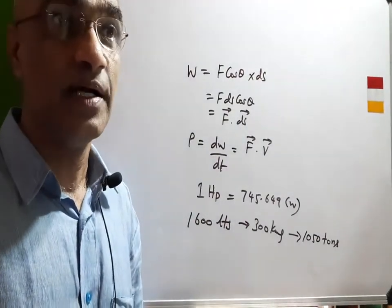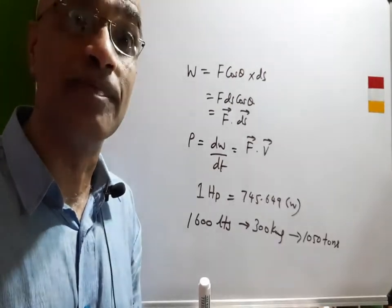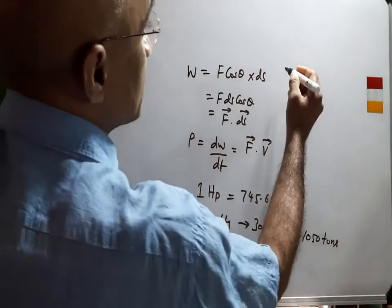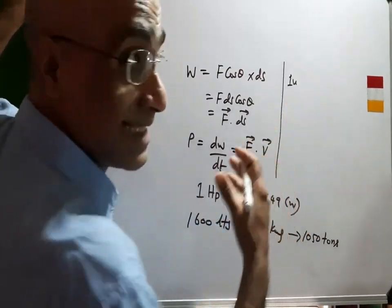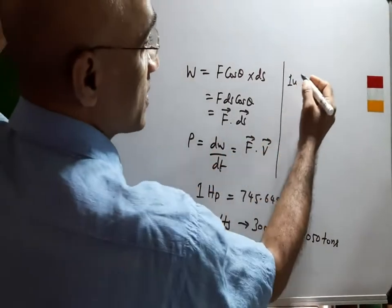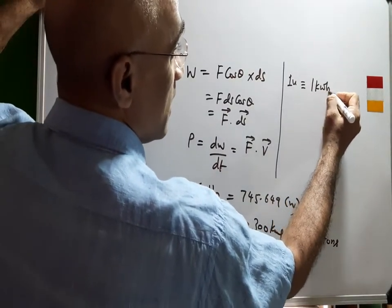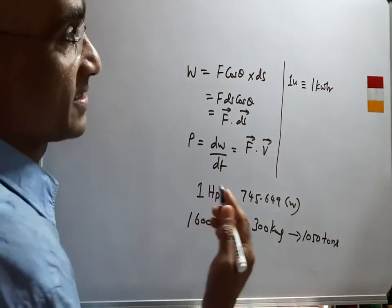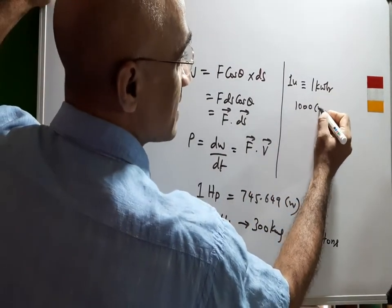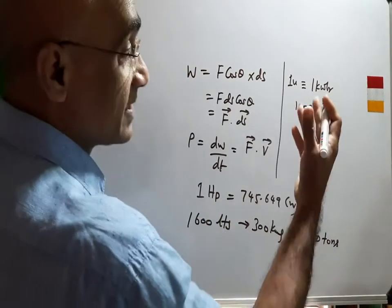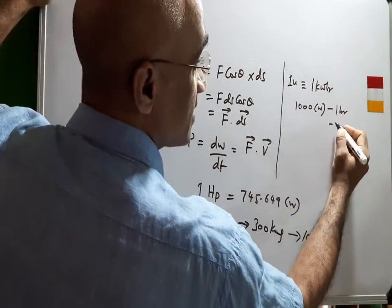Now do not get confused with the energy unit that is being discussed at home by the state electricity board department. They say one unit, which is the Indian mode of calculation - one unit when one kilowatt hour is being utilized. That is precisely thousand watts, a device that is rated thousand watts when it is operated for a span of one hour, I mean precisely 3,600 seconds.